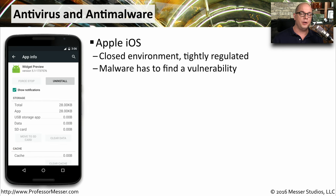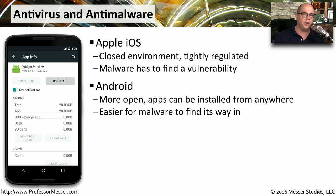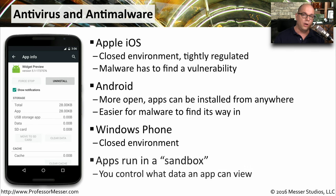Malicious software is not just something we have to worry about on desktop computers — we also have to be concerned about it on mobile devices. If you're running Apple's iOS, it's a very closed and tightly regulated environment as to what applications can be installed. Malware needs to find a vulnerability in the phone or operating system itself to get in. On Android, you're able to install applications from anywhere, making it a more open environment and somewhat easier for malware to find its way onto the device. Windows Phone is a closed environment, very similar to iOS, with few options for sideloading from third-party locations. With all of these operating systems, applications run in a sandbox, meaning an app only has access to the information it needs and no application has complete access to everything on your mobile device.